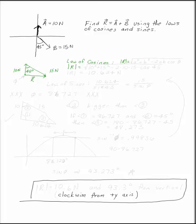So the magnitude of R, using the law of cosines, is the square root of 10 squared plus 15 squared, thus the magnitude of A and B, minus 2 times 10 times 15 times the cosine of the angle in between them, which in this case is 45.